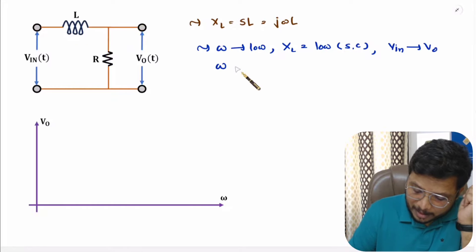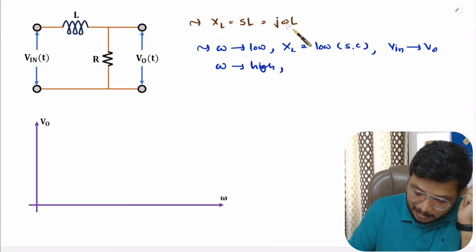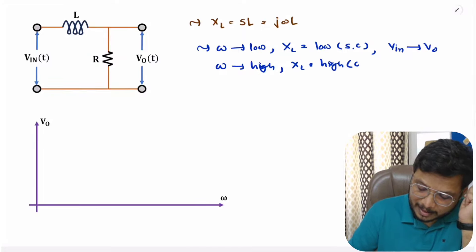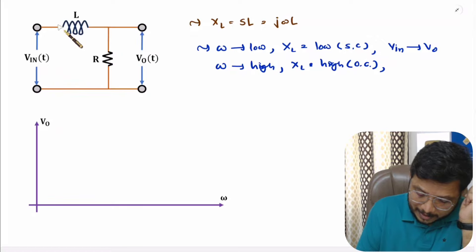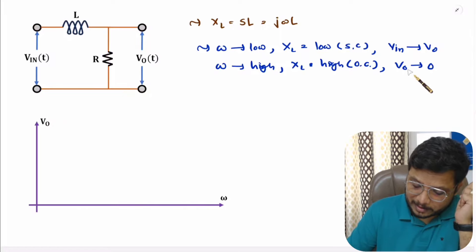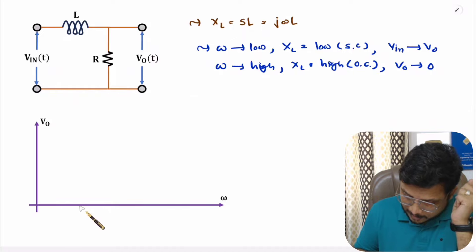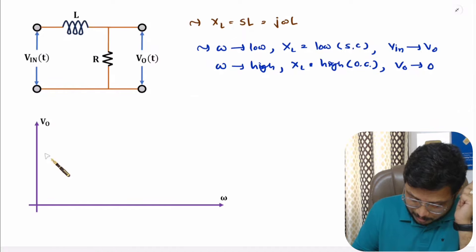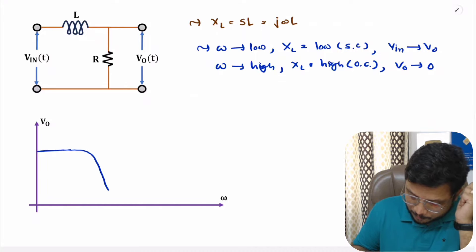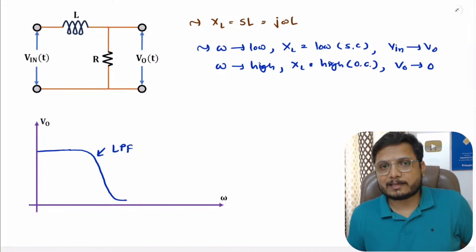At higher values of ω, XL is higher, meaning the inductor acts as an open circuit. When XL is open circuit, input cannot reach the output, so output voltage stays zero. Therefore, at lower frequencies input passes to the output, and as frequency increases the output goes toward zero — this is the low pass filter response.